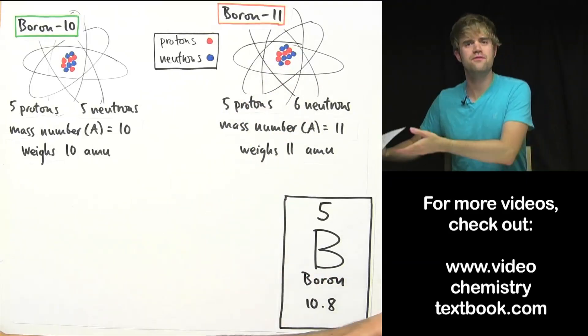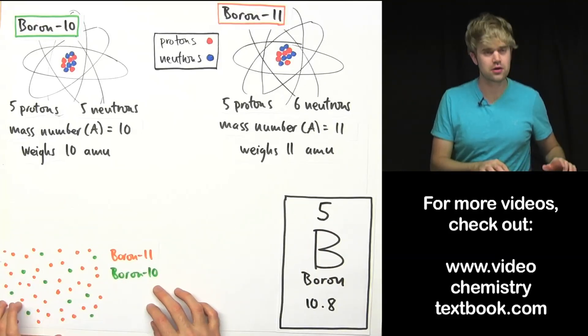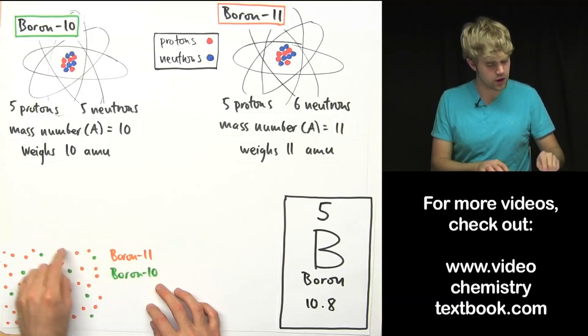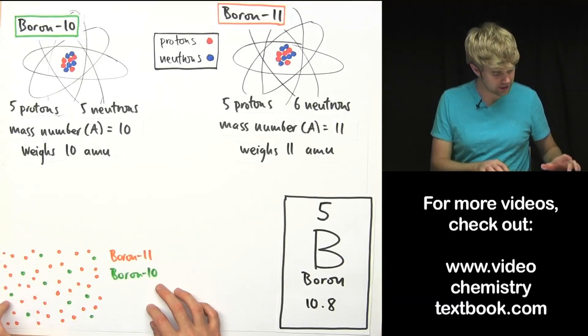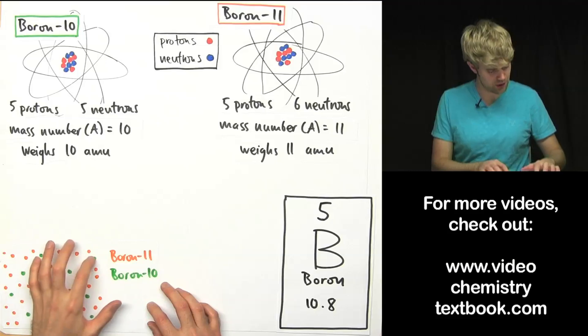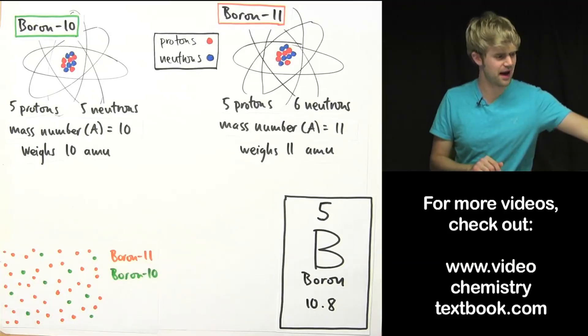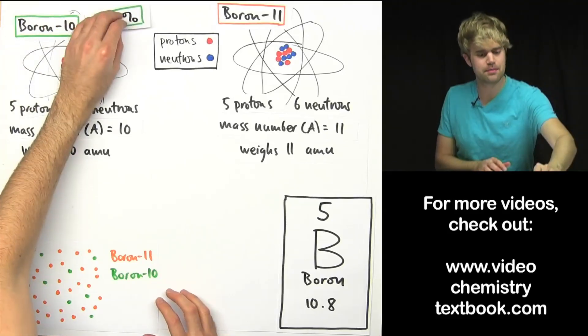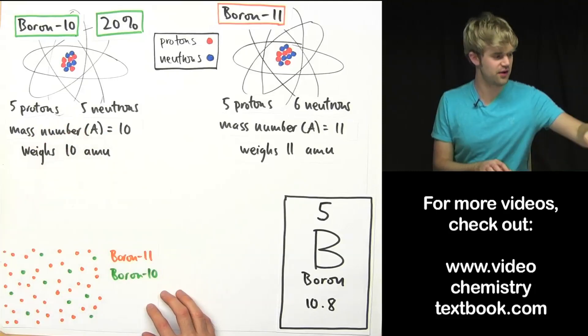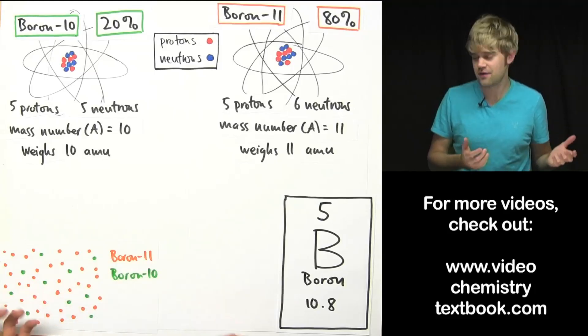If we picked out 50 random boron atoms just anywhere, this is what they look like. The vast majority of them would be these orange boron-11 atoms and a much smaller minority would be boron-10 which I'm representing with these green circles here. It turns out that if we do the math that only about 20% of all of the boron atoms in the world are boron-10 with 5 neutrons and 80%, the vast majority, are boron-11 atoms.